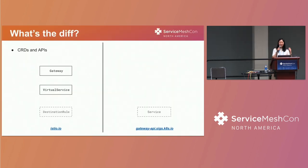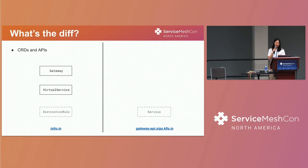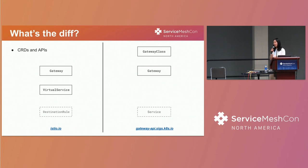So what's the difference between the Istio gateway and the Gateway API? First off, the CRDs and APIs are different. With Istio, you get access to the gateway, virtual services, and destination rules after you install Istio into your cluster. With the Gateway API, after you have your cluster spun up, it doesn't come out of the box with core Kubernetes — you have to run a simple kubectl apply to get access to resources like the GatewayClass, which describes your load balancing infrastructure; the Gateway, which is an instantiation of your GatewayClass; and then routes like HTTPRoute, which routes traffic towards your services.